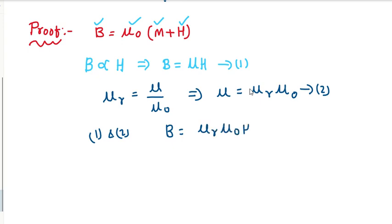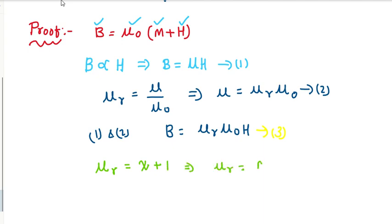From equations one and two, we can write B equals mu r into mu naught into H. This is equation number three. Next, we know the relation between relative permeability mu r and susceptibility chi: mu r equals chi plus 1, which implies mu r equals M over H plus 1.